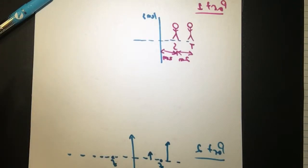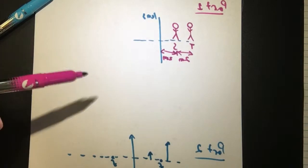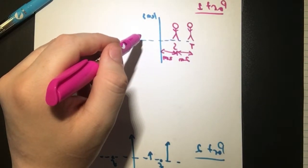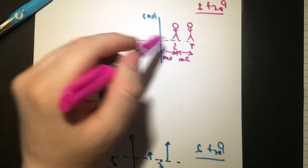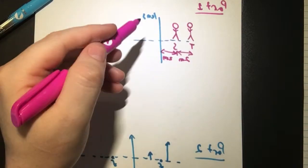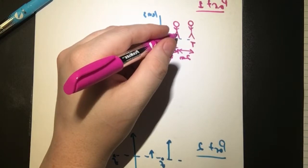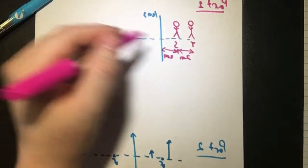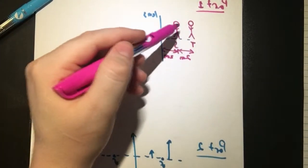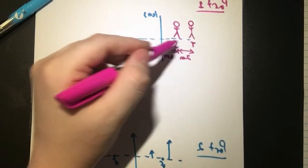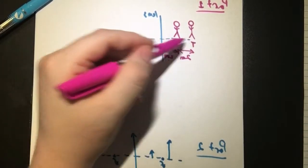Part A says the two images that the lens forms of the kids are at equal distances from each other. So if the images are equal distances from the lens, we want to know: is this lens converging or diverging? Since the images are equal distance to the lens — one kid is close and one is further away — we know that one of the images is going to show up on this side and one on the other side.